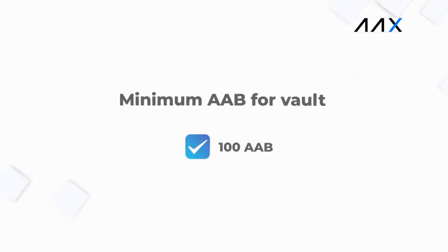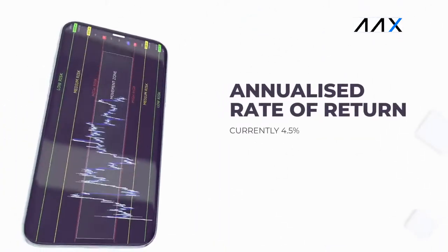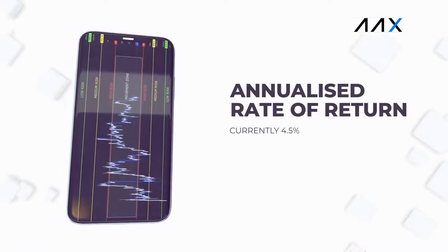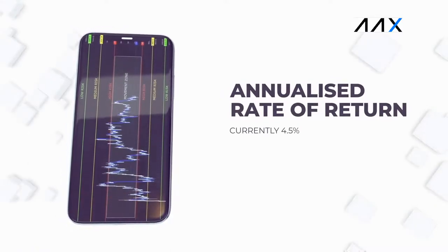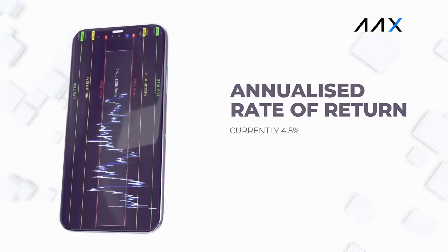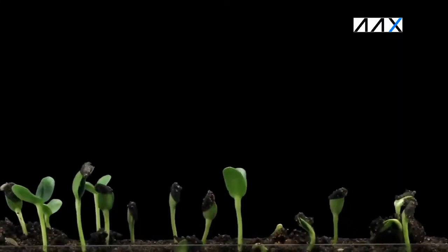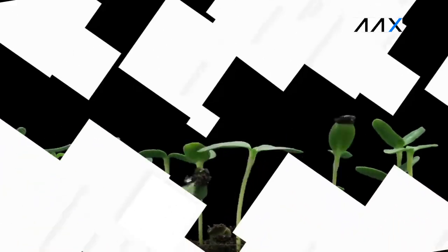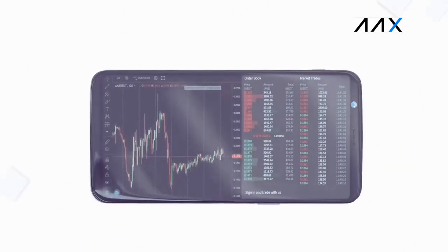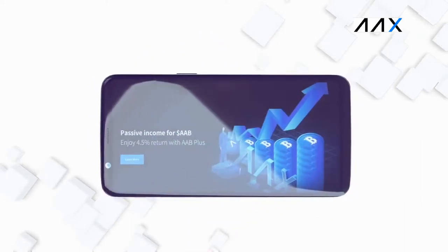When placing your AAB into the vault, you will require a minimum of 100 AAB, which is currently the equivalent of around US$19. You will receive an annualised rate of return of 4.5%. So if you have 1,000 AAB and place it into the AAX Vault with a return of 4.5%, after one year you would have gained 45 AAB. You then leave your AAB in the vault and watch it grow, allowing for flexibility without having to wait an extended period of time for your interest.